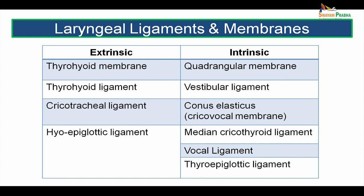The intrinsic ligaments and membranes include the quadrate membrane seen in the part above the vestibular ligament — the lower border of this quadrate membrane forms the vestibular ligament. The conus elasticus or cricovocal membrane is seen in the lower part of the larynx, and the upper thickened border of the conus elasticus is the vocal ligament. The median cricoid ligament connects between the cricoid cartilage and the thyroid cartilage in the midline. The thyroepiglottic ligament connects the posterior aspect of the thyroid angle to the lower end of the epiglottis.